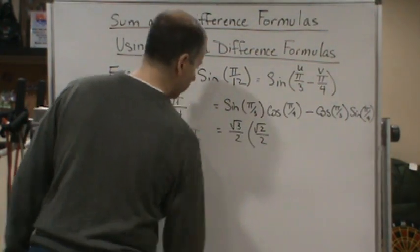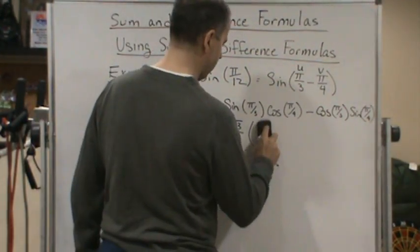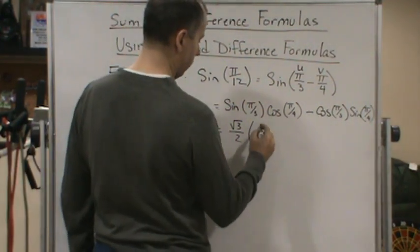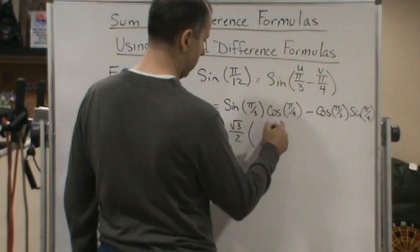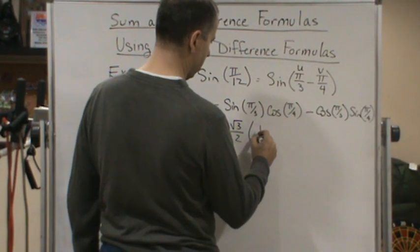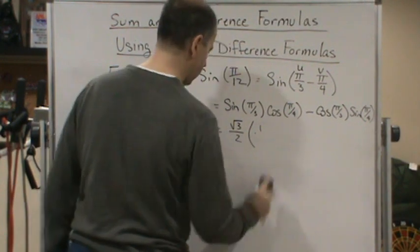Oh, hold on. That's not right. That's going to be cosine of pi over 4, that's going to be... oh, that's going to be 1. Yeah, that was right. It's square root 2 over 2.